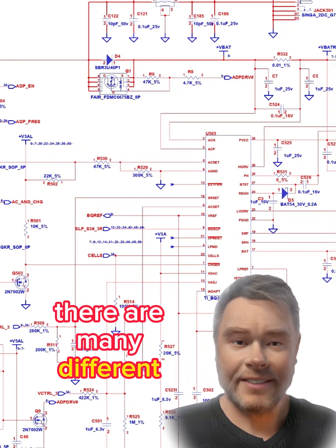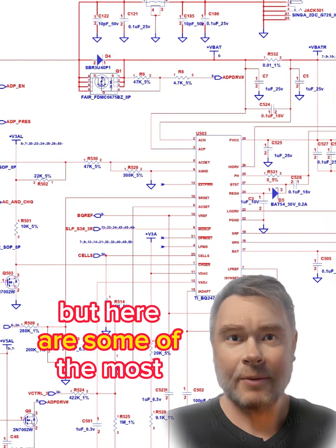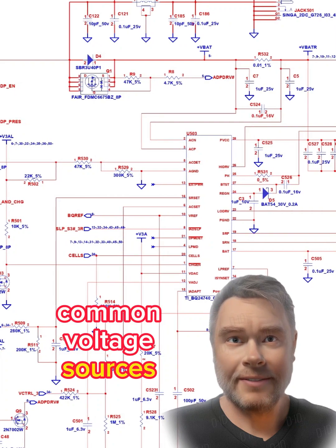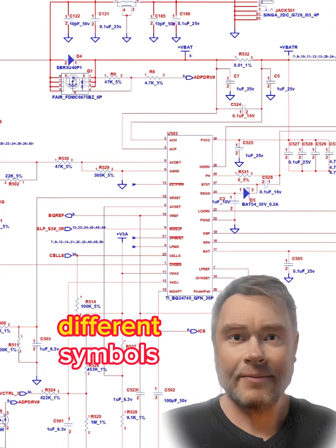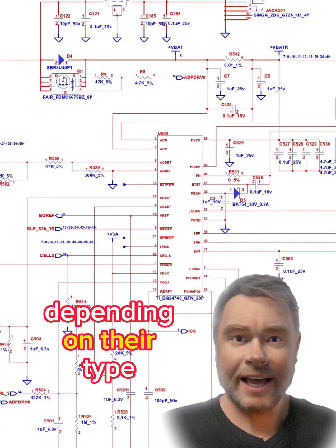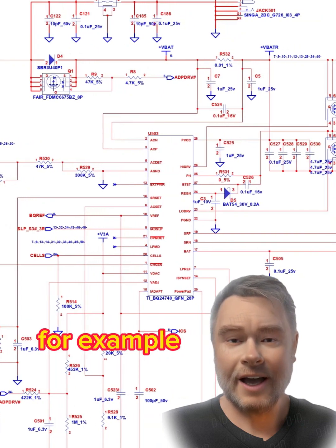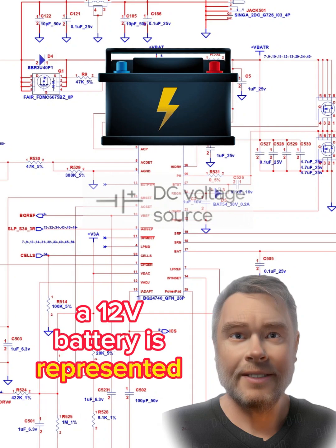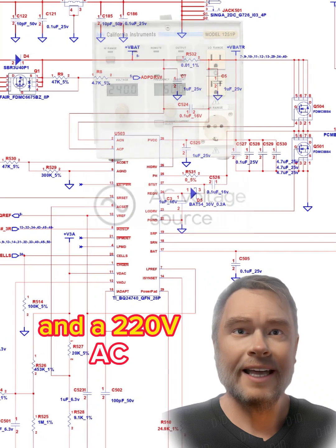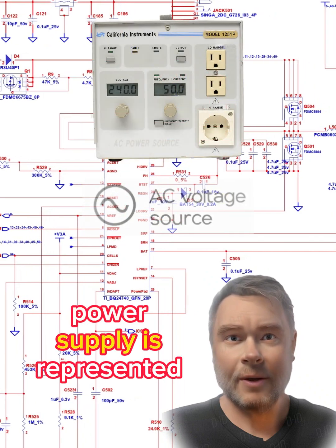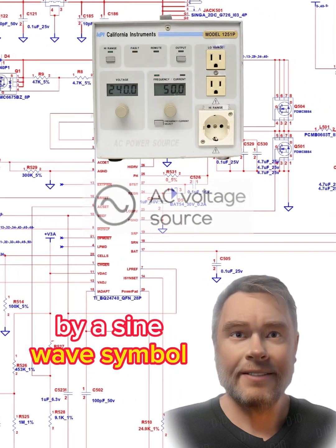There are many different schematic symbols, but here are some of the most common. Voltage sources: Batteries and power supplies are represented by different symbols, depending on their type. For example, a 12V battery is represented by a rectangle with two lines sticking out of it, and a 220VAC power supply is represented by a sine wave symbol.